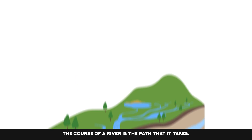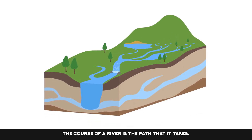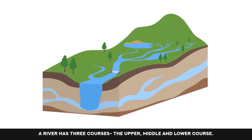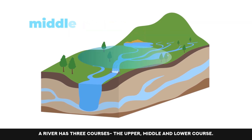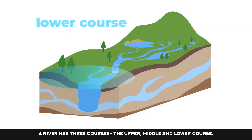The course of a river is the path that it takes. A river has three courses: the upper, middle and lower course.